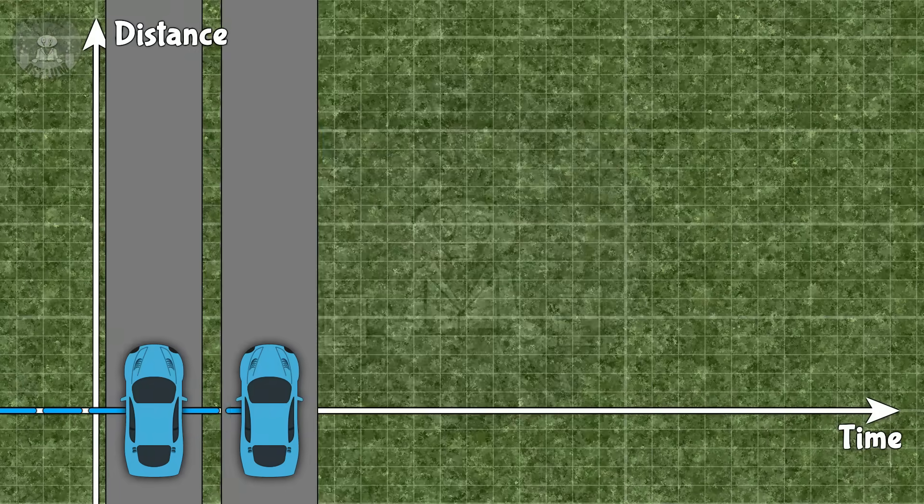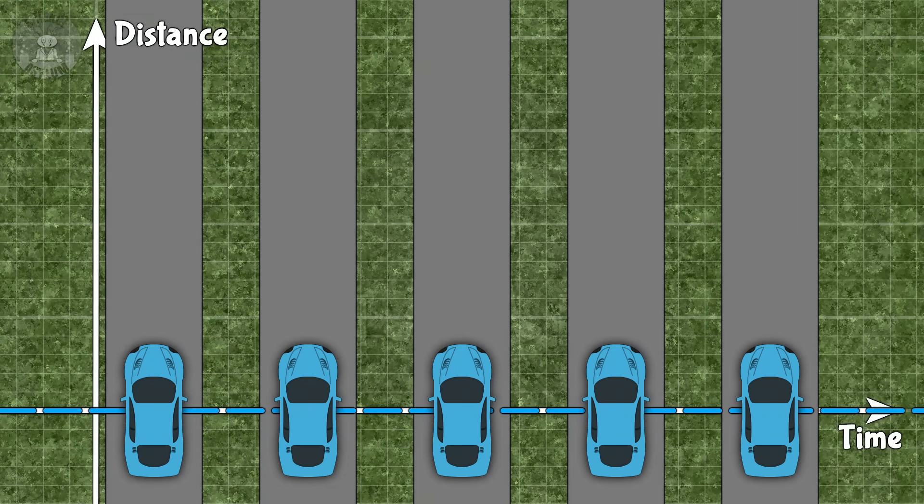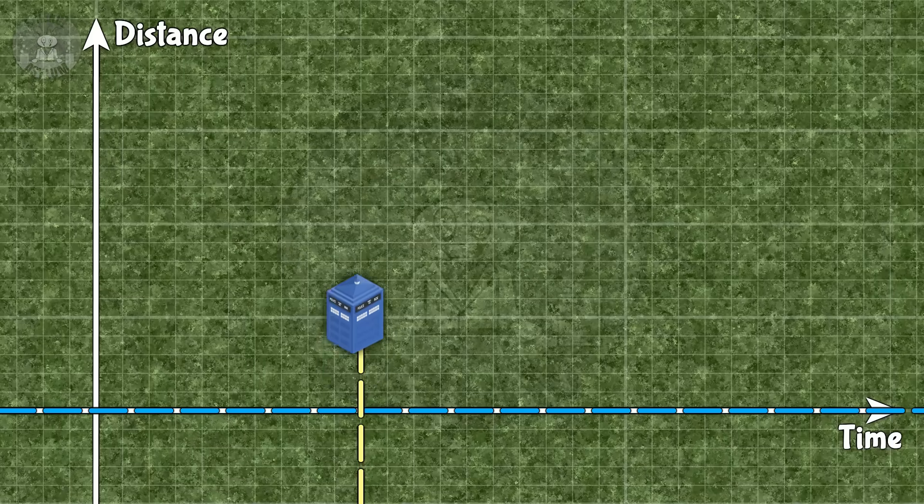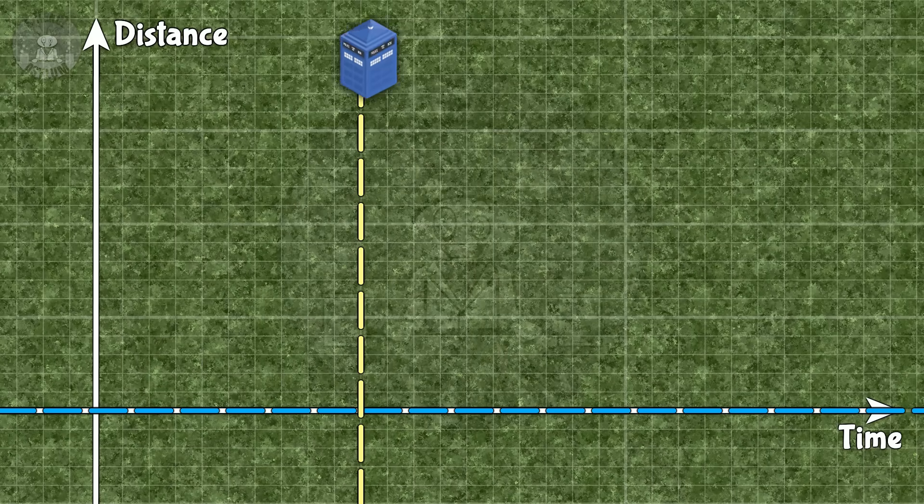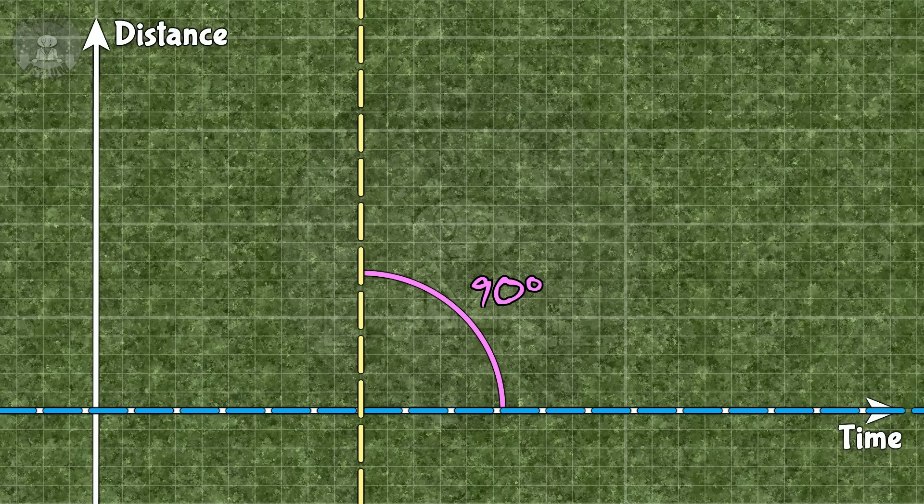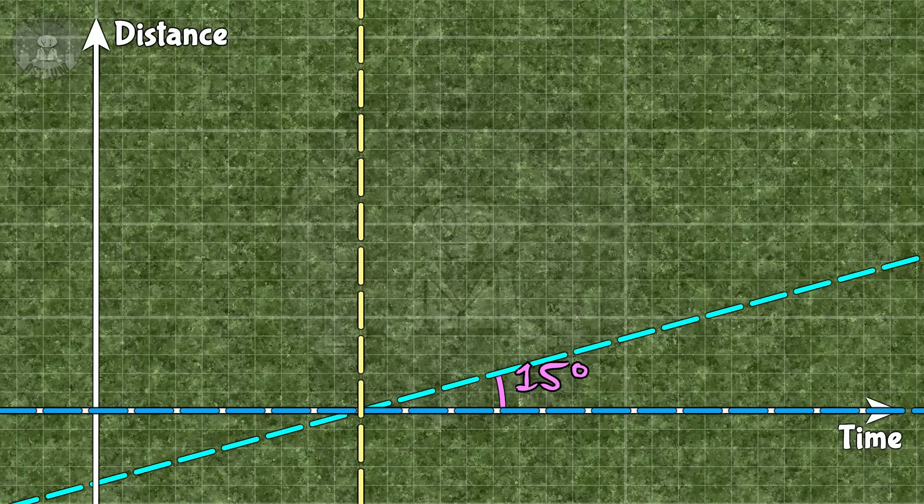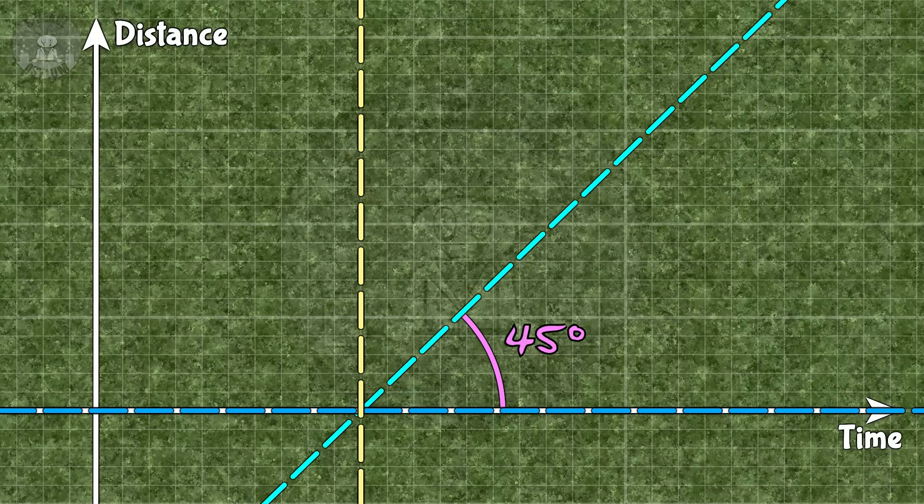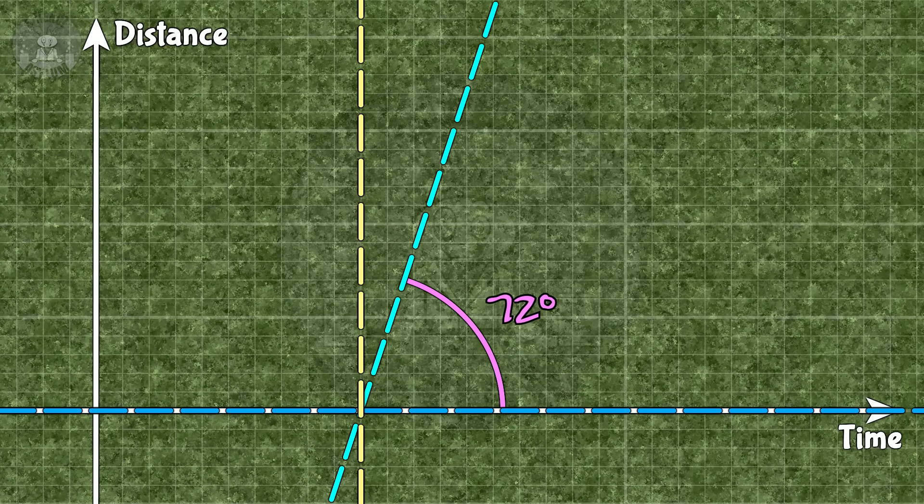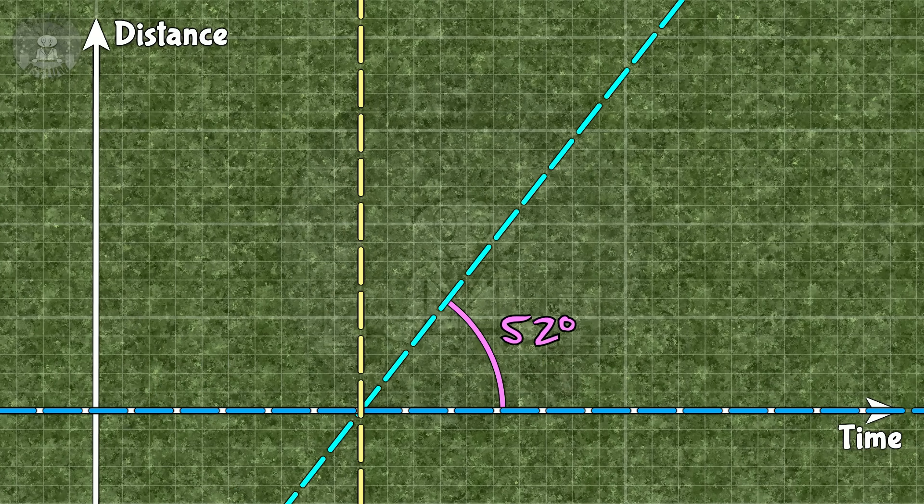But what if instead of using the slope, we use the angle? A car that isn't moving at all is going to make a horizontal line on this graph. Let's measure all of our angles from there. Infinite speed, also known as magical teleportation, would be a vertical line. That's 90 degrees from the horizontal, which should be the biggest angle possible. All other speeds between zero and infinity would be measured as an angle between zero and 90. Faster objects would have a bigger angle. Slower objects, a shallower angle.